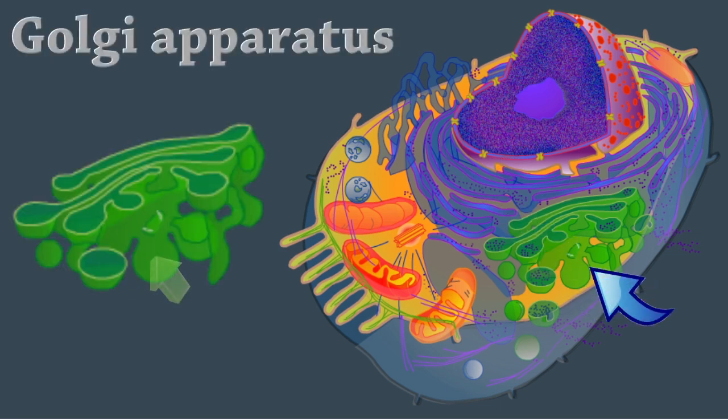Let's start with the Golgi apparatus. This is a stack of smooth membrane sacs and associated vesicles close to the nucleus. It packages, modifies, and segregates proteins for secretion from the cell, for inclusion in lysosomes, and for incorporation into the plasma membrane.